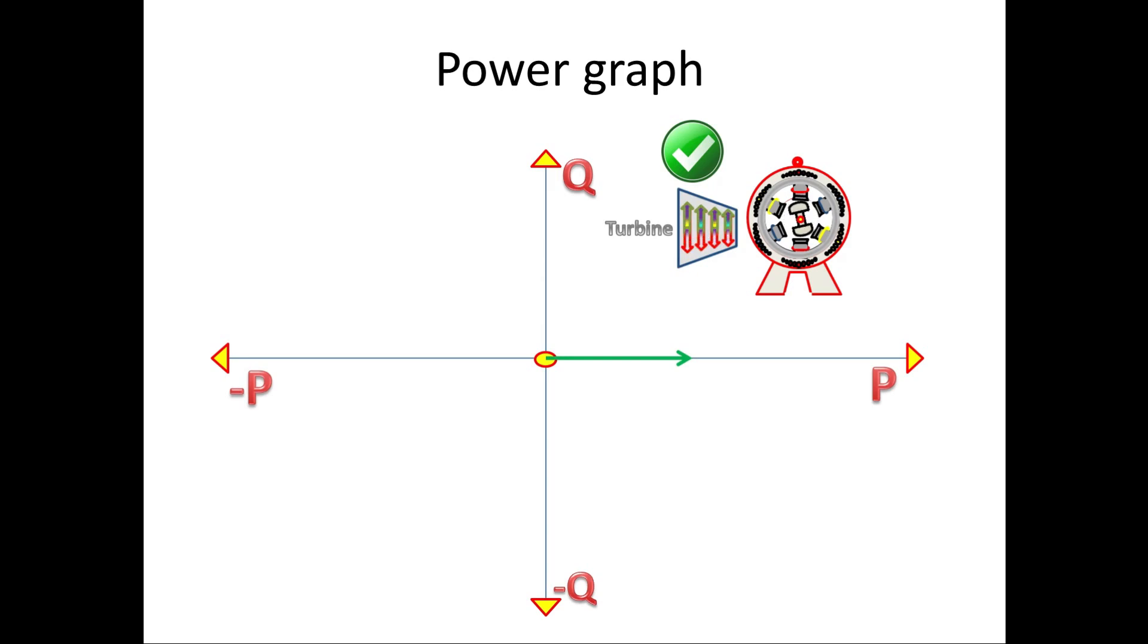Due to this, the power will be positive, that is P is positive. And if exciter is also in good working condition, then the rotor produces high magnetic field. Due to this effect, it will deliver VAR to grid. So Q is also positive. Since P and Q are positive, the operation comes under first quadrant.